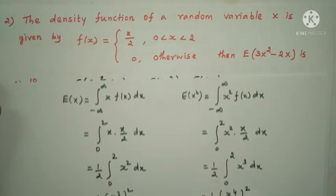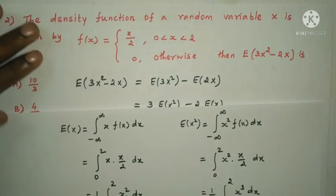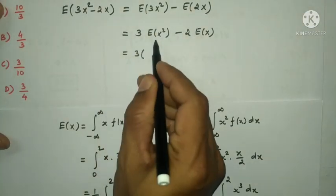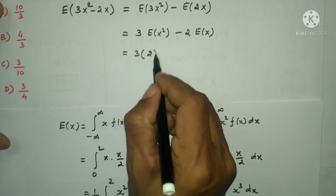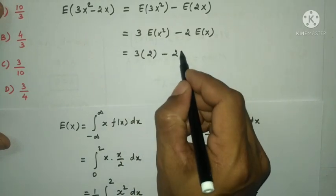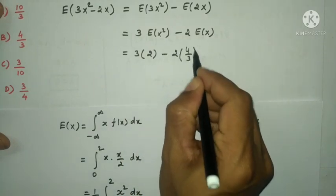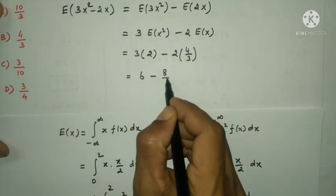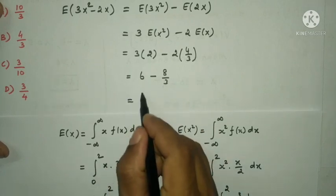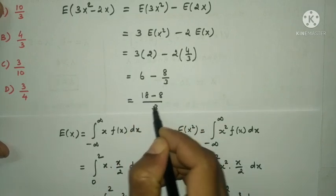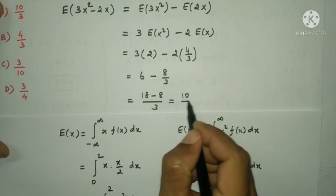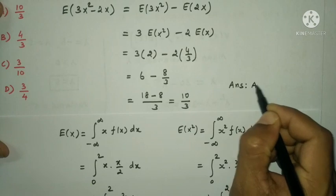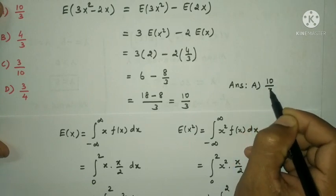Now substituting: E(3x² - 2x) = 3·E(x²) - 2·E(x) = 3·2 - 2·(4/3) = 6 - 8/3 = 18/3 - 8/3 = 10/3. Therefore the answer is option A, 10/3.